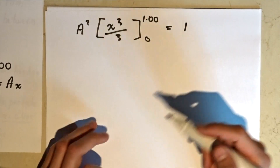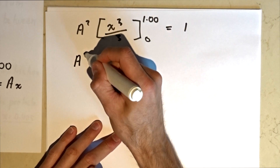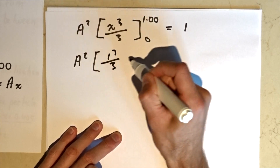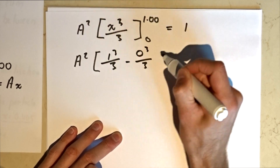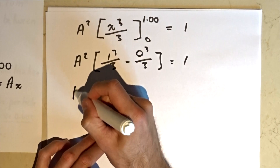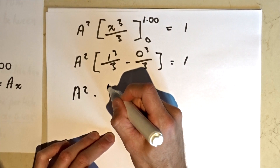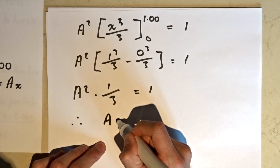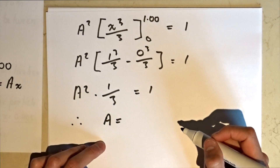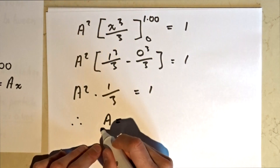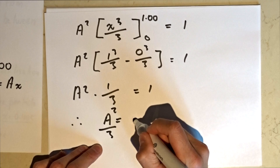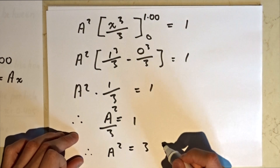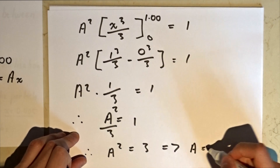Cool, making sense. Now we plug in our values and evaluate the integral: one-third minus zero-thirds equals one-third. So A squared times one-third equals one, therefore A squared equals three, and A equals square root of three. So that's our constant A.